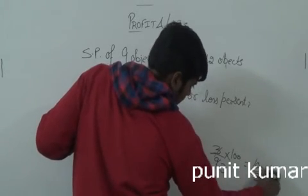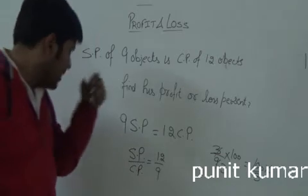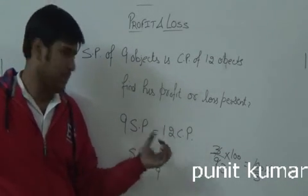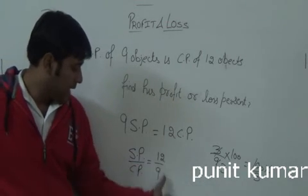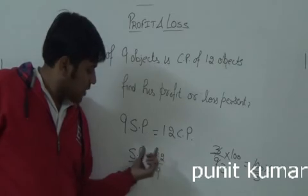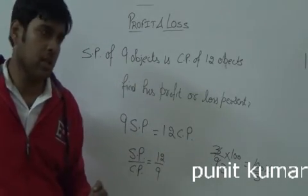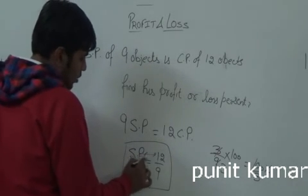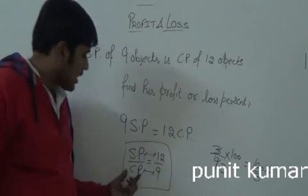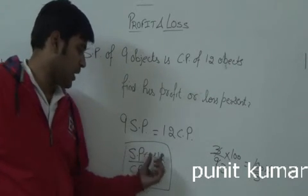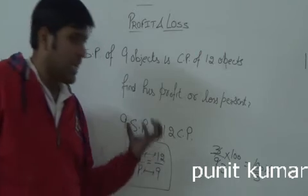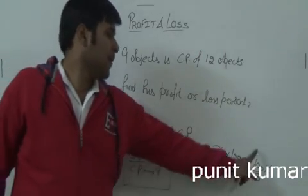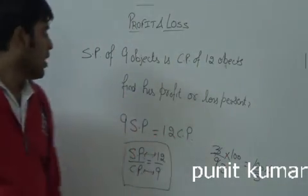Using the ratio method: SP by CP equals 12 by 9, which simplifies to 4 by 3. So CP equals 9 and SP equals 12. Profit equals 12 minus 9 equals 3. Profit percentage equals profit divided by CP into 100, which is 3 by 9 into 100, giving approximately 33.3% profit.